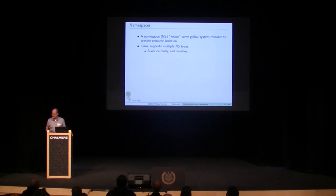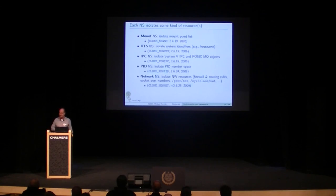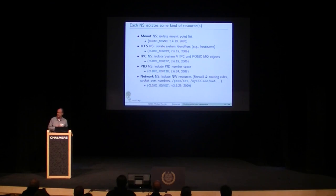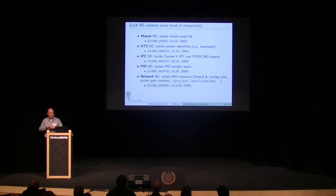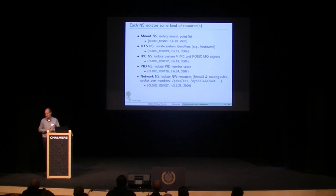Linux currently supports seven different types of namespaces. This list has been slowly growing over time and is likely to grow again in the next year or two. The first was mount namespaces, added back in 2002. The idea of mount namespaces is that a group of processes in one mount namespace sees a certain arrangement of the directory hierarchy, while processes in another mount namespace see a completely different arrangement — meaning different containers can see different sets of filesystems and mount points.